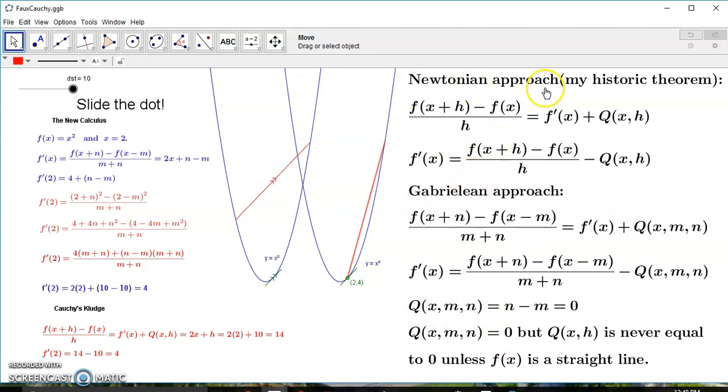So this Newtonian approach was a result of Newton not understanding exactly what he was doing. So he was very much in the dark, just like Leibniz and all the others that came after him.